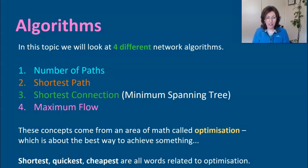The ones that we're going to work through are here: the number of paths, so just working them out in a basic way; shortest path; shortest connection, also known as minimum spanning tree; and maximum flow. It leads into a topic in future maths called optimization, looking at the best path between things. And it's often the shortest way, the quickest way, and the cheapest way to connect certain paths.